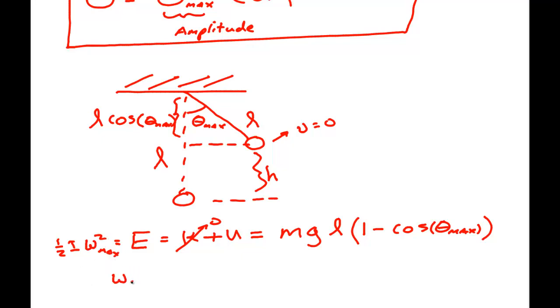So you could in fact solve this by one half I omega max squared and find the maximum angular speed. You could find omega x times L and find the maximum tangential speed. You also know that when it's down here, it's got a centripetal acceleration pulling upward.